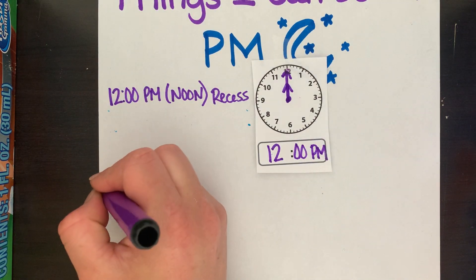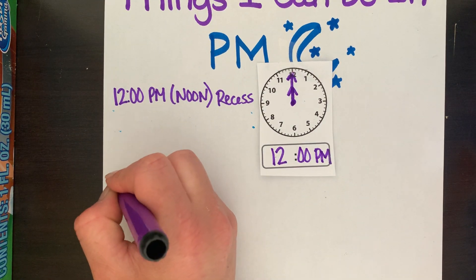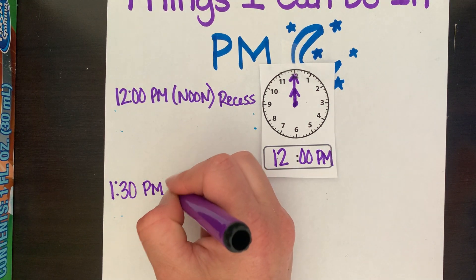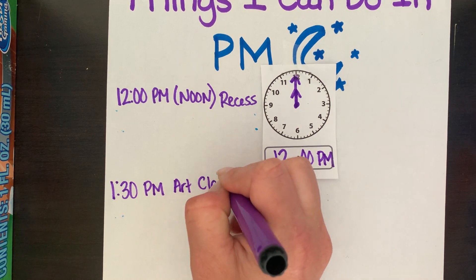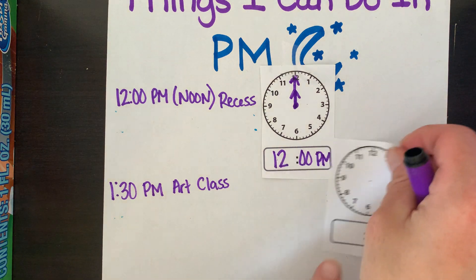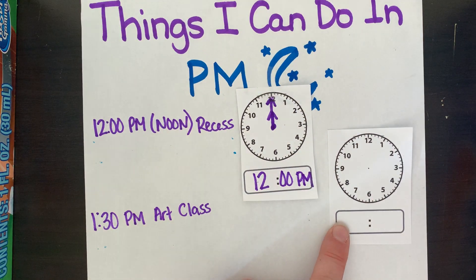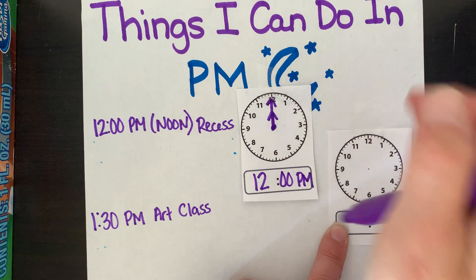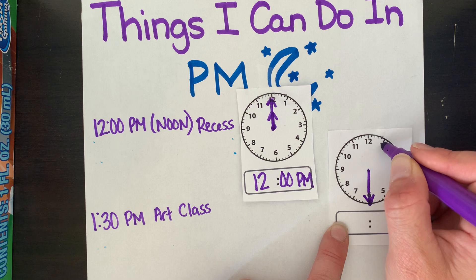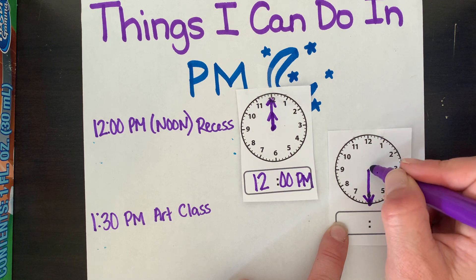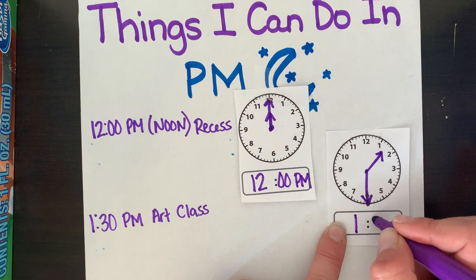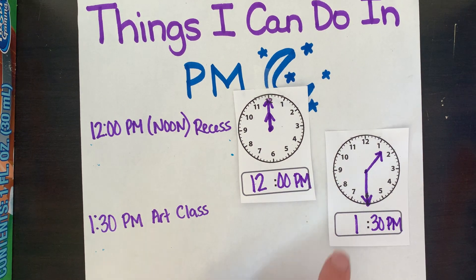Next comes 1:30. At 1:30 p.m. I'm still at school, but maybe I'm in art class with Ms. Pashayan. So I want to put that on my schedule — art class with Ms. Pashayan. At 1:30, my minute hand is going to go to the 6 at 30 minutes. And if I'm at 1:30, it means I'm already halfway around the clock — halfway between the 1 o'clock hour and the 2 o'clock hour. So at 1:30 p.m., I'm at art.